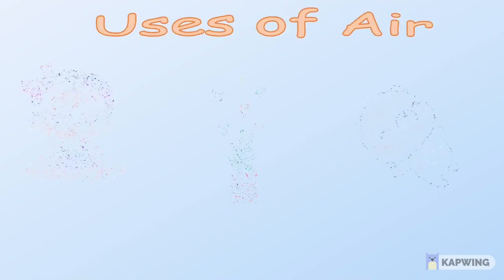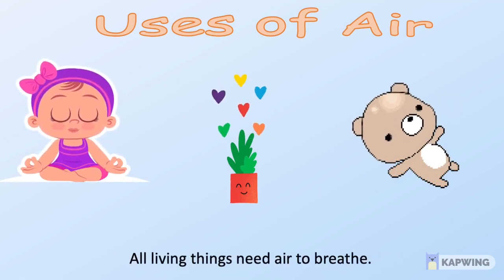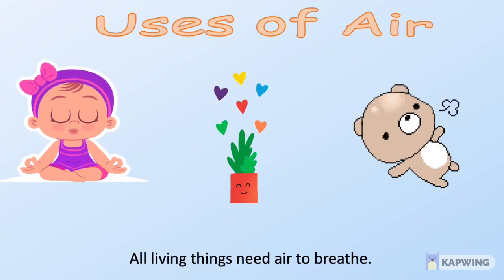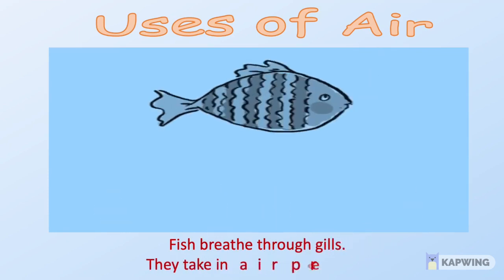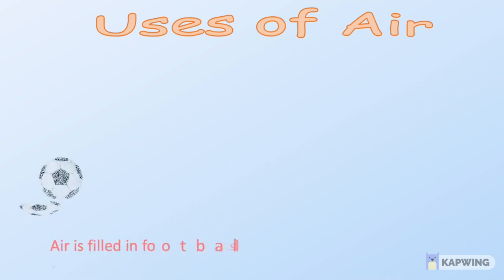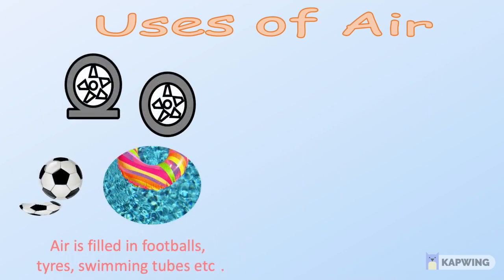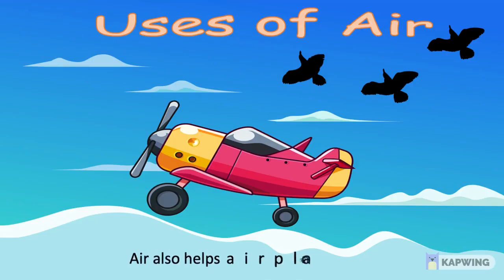Now, let us learn some uses of air. As we all know, all living things need air to breathe. Living things cannot live without air. Fish breathe through gills — they take in air present in water. Air is filled in footballs, tires, swimming tubes, etc. Air is also needed to keep the fire burning. Air also helps airplanes and birds to fly. These are some of the uses of air.